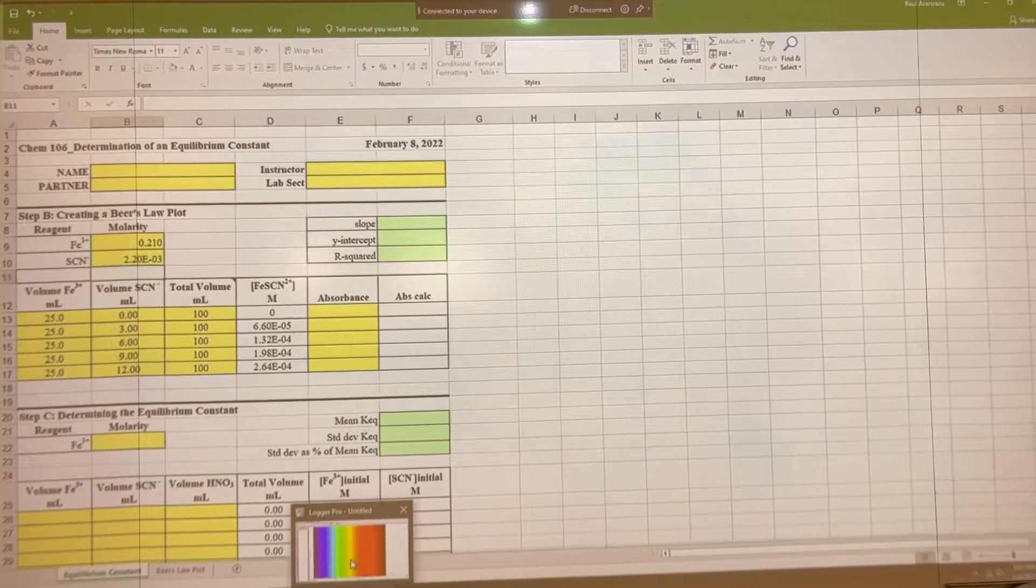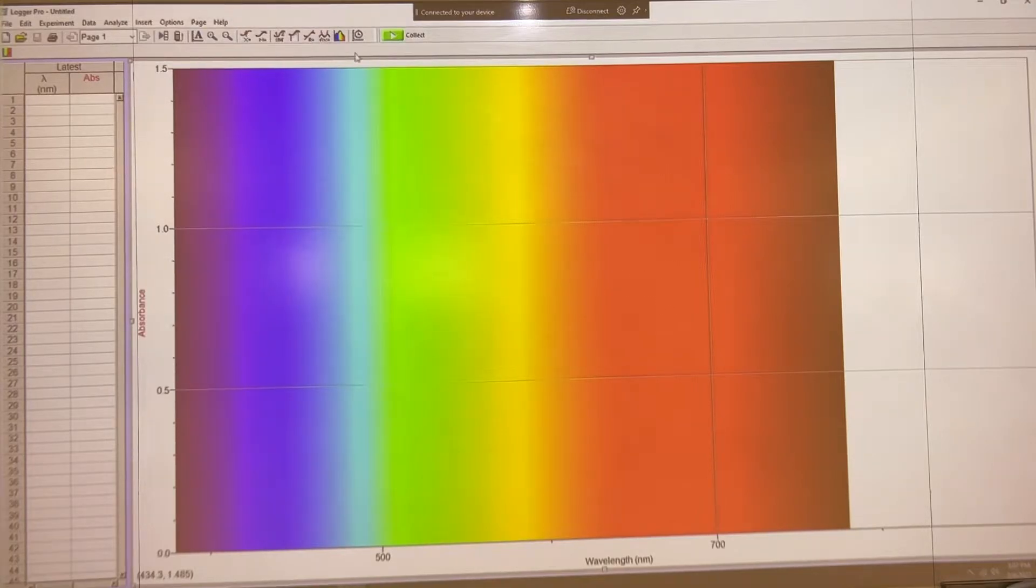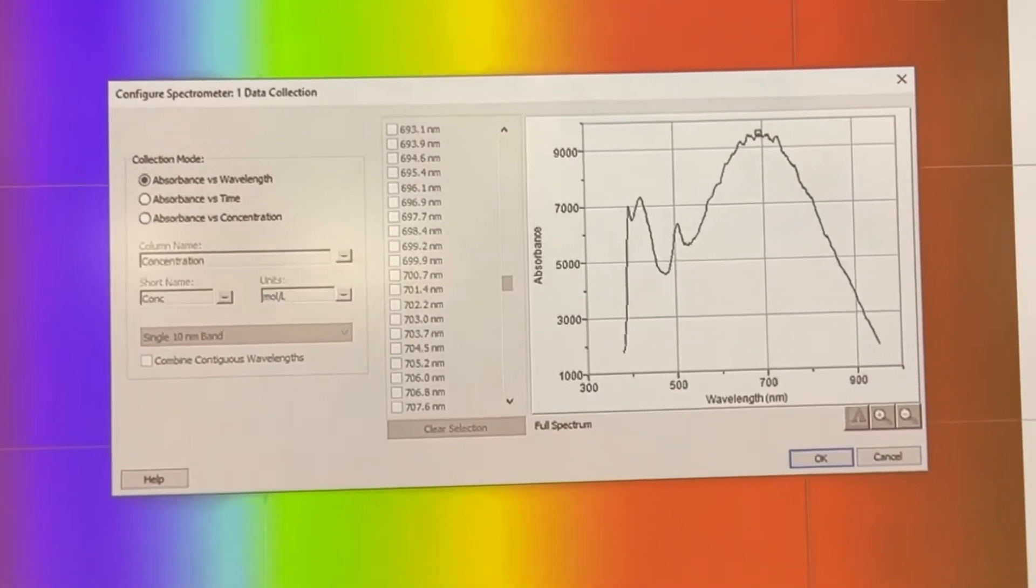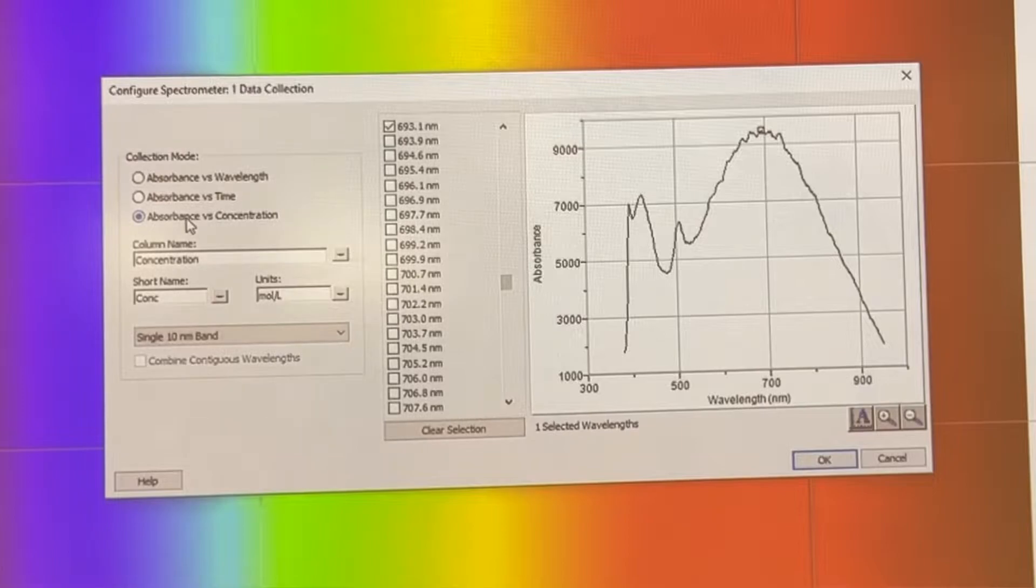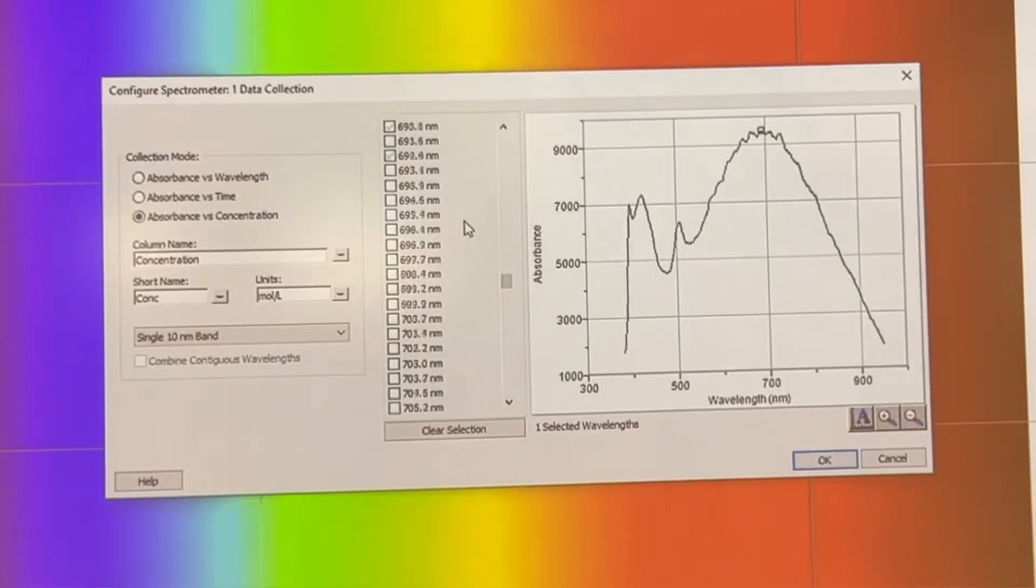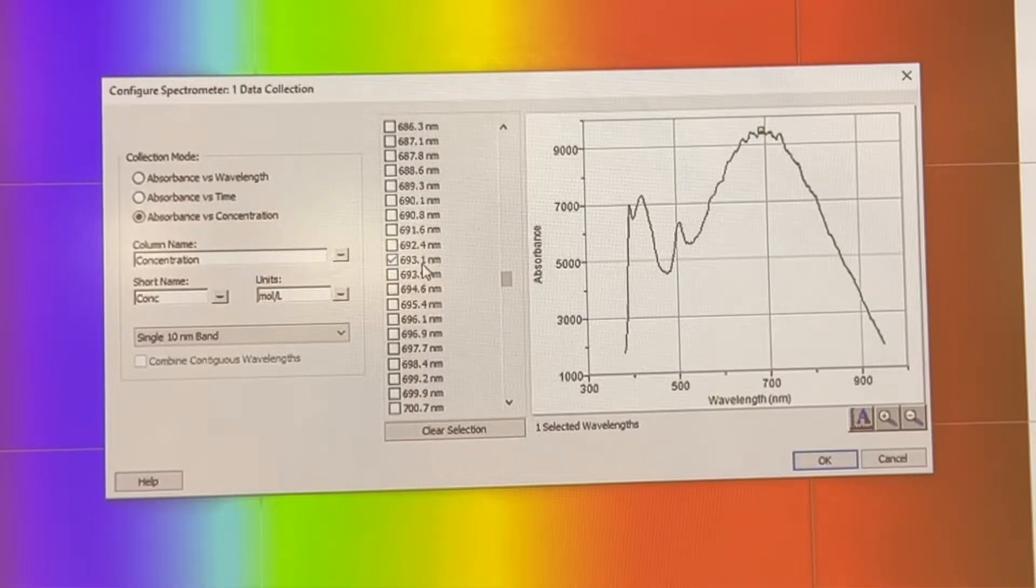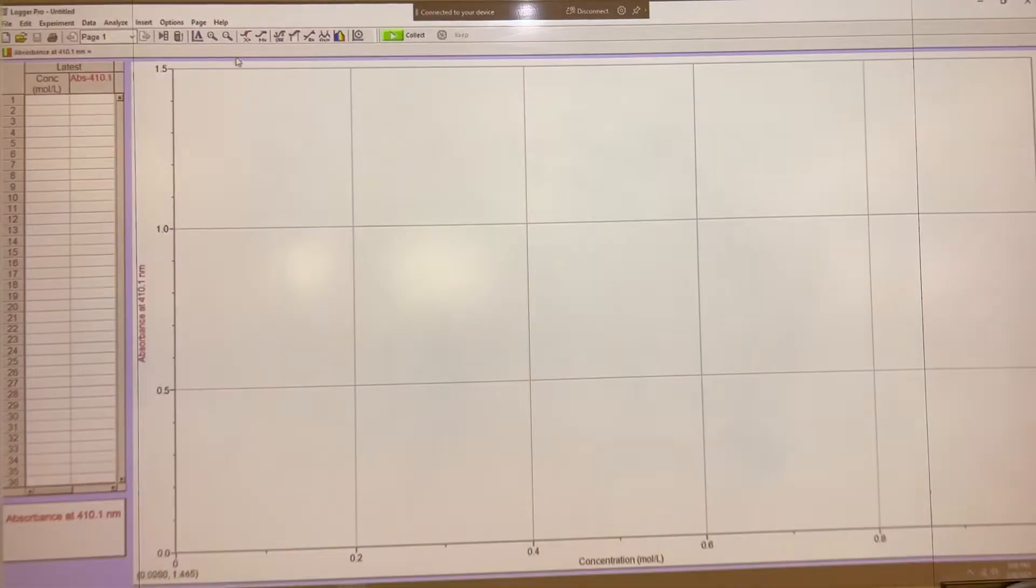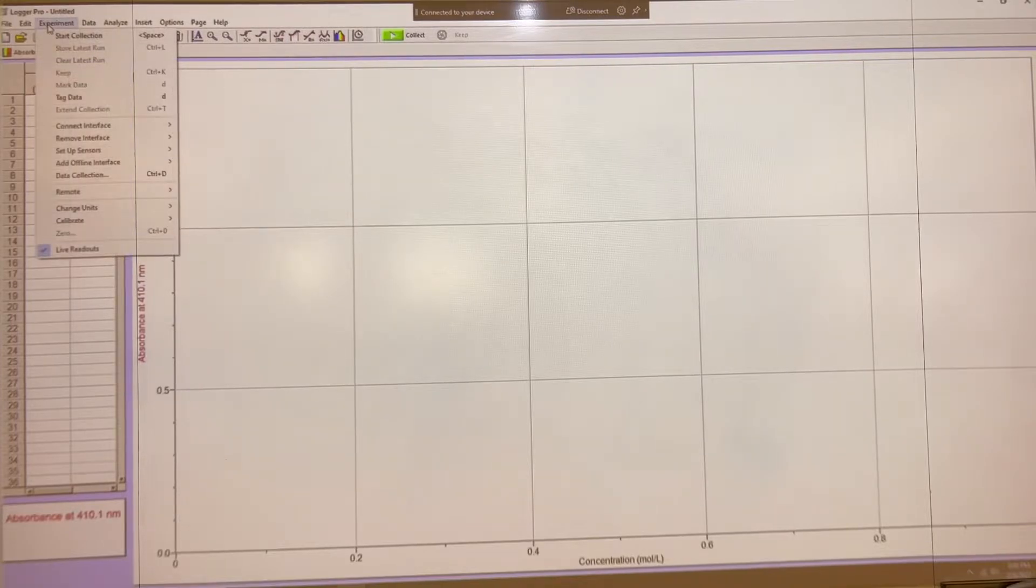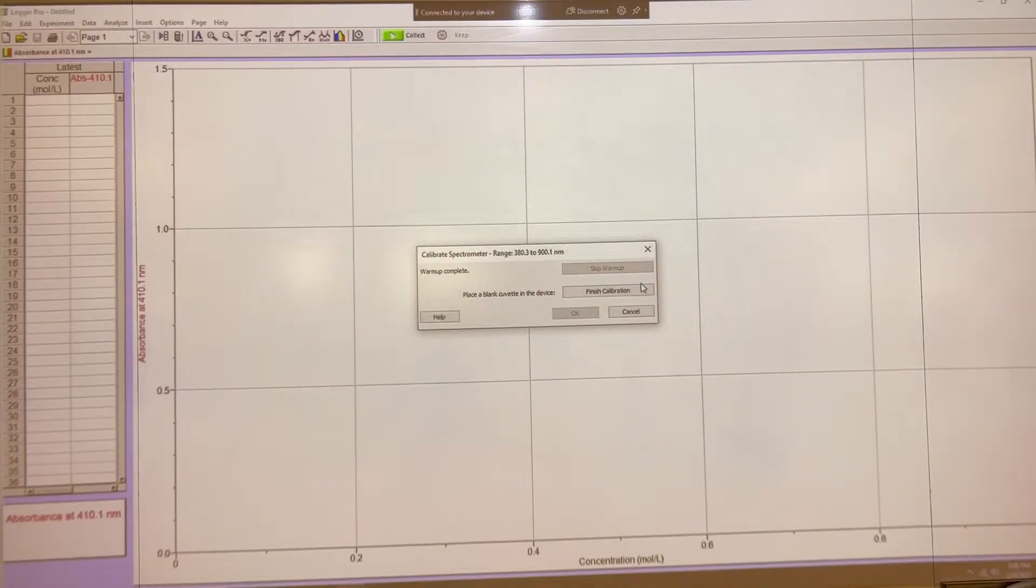Now we've got to calibrate it. We have to adjust our parameters here to go absorption versus concentration since we're looking at concentration. And then this gives us an option to select a wavelength at which we'll be reading. We're trying to find anything that's close to 410 nanometers. 410.1, that's the closest we'll get, so that's fine. We'll hit OK. Then now we've got to calibrate it. We'll go to experiment, calibrate our spectrophotometer here. The spectrophotometer is all warmed up.